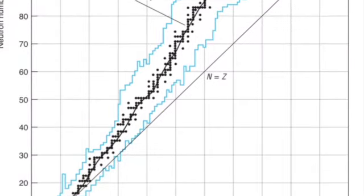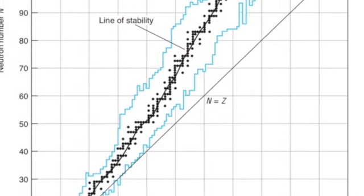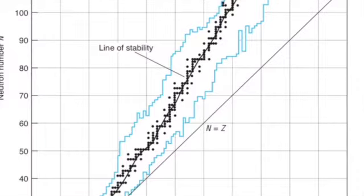All nuclei outside the line of stability would be unstable, hence undergo radioactive decay.